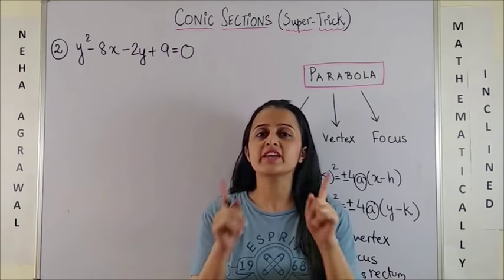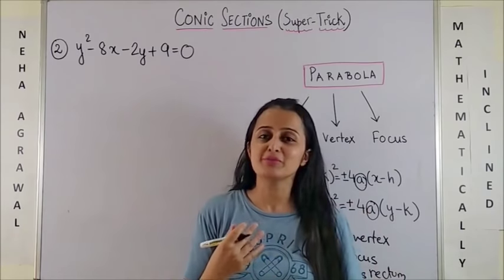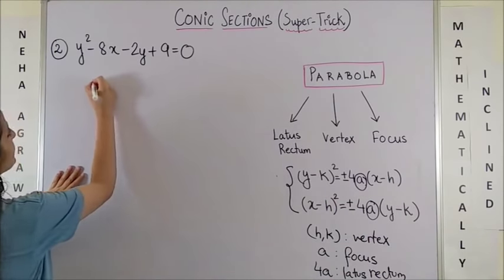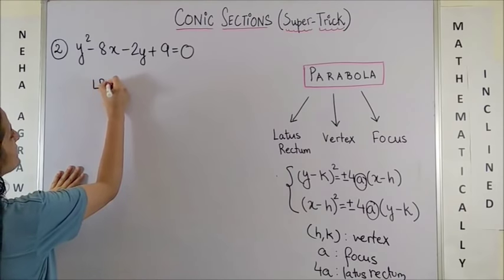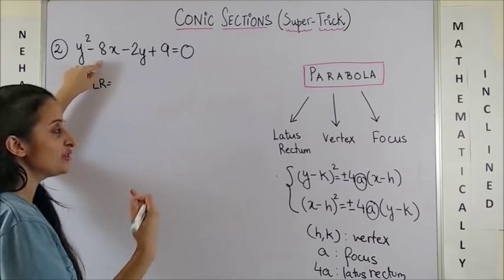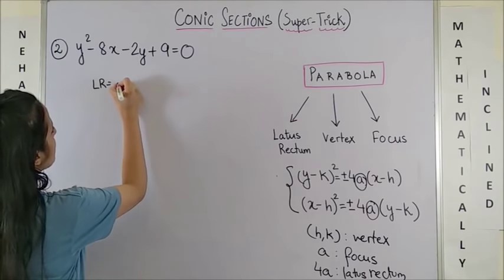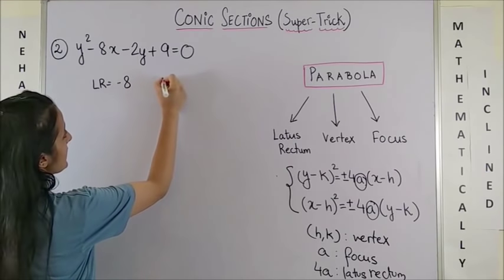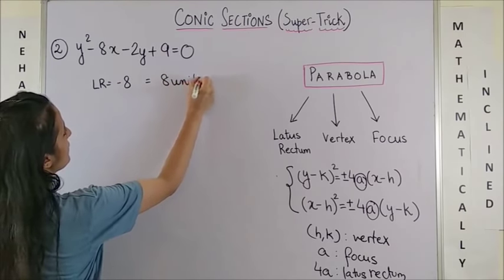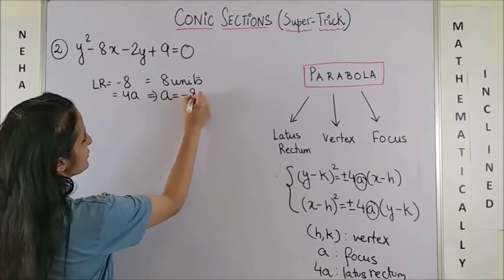Let's take one more example with y² before moving to x². To find the latus rectum: since it is y², look at the coefficient of x, which is −8, so the latus rectum is 8 units. This also gives us 4a = −8, so a = −2.